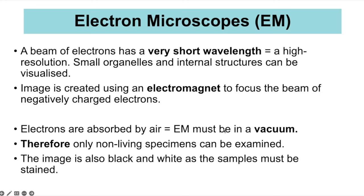Electron microscopes use a beam of electrons with a very short wavelength, giving high resolution so small organelles and internal structures can be viewed. The beam is condensed into a fine beam using an electromagnet that focuses the negatively charged electrons. Electrons are absorbed by air, so the electron microscope must operate in a vacuum with no air present. This means you cannot view living specimens, and you only get black and white images — the sample must be stained.